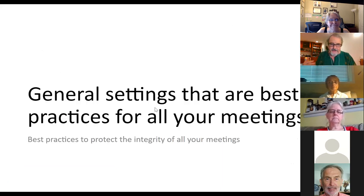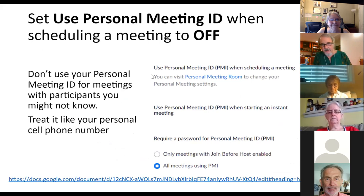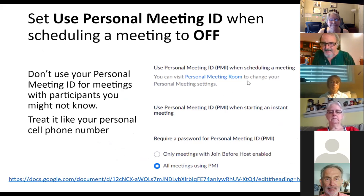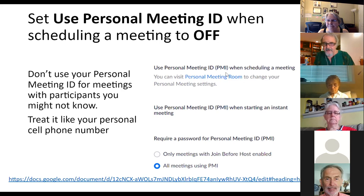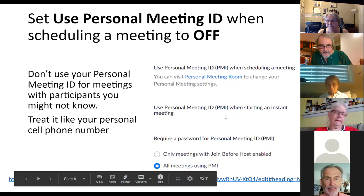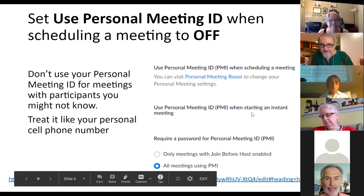These are the general settings I set up for all my meetings, no matter how important they are. First: you should not use your Personal Meeting ID for meetings like this one. Use your personal ID for instant meetings — it's like your phone number — but not to give out to just anybody. When scheduling a meeting, I set 'use personal meeting ID when scheduling' to off, and I always require passwords.